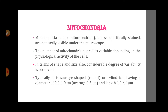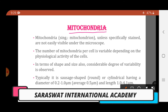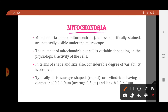First of all, let us begin with the mitochondria. In lower standards you might have studied that mitochondria are called as the powerhouse of the cell. Why are they called the powerhouse of the cell? Because they are the organelles concerned with the production of energy in the form of ATP, that is adenosine triphosphate. And therefore they are called as the powerhouse of the cell. So let us begin with the structure and function of the mitochondria.